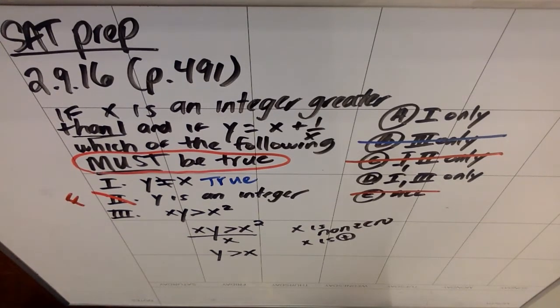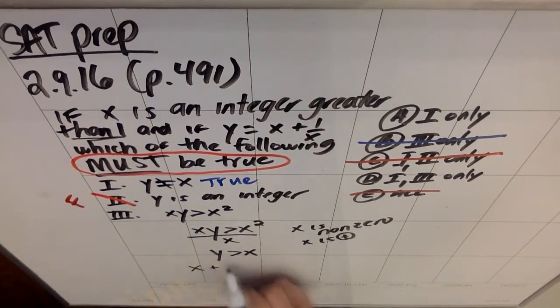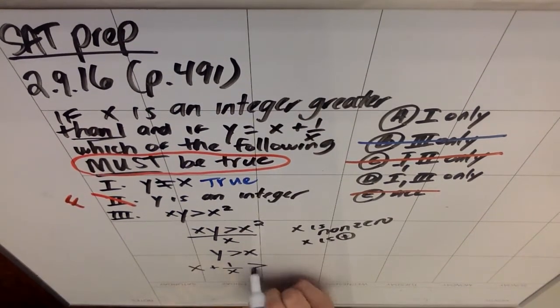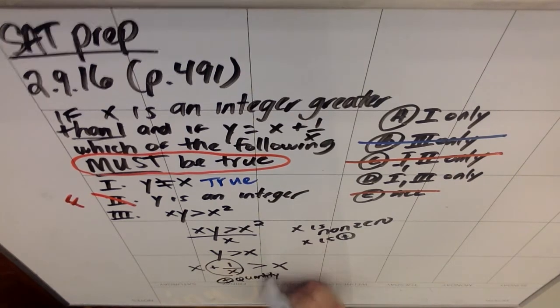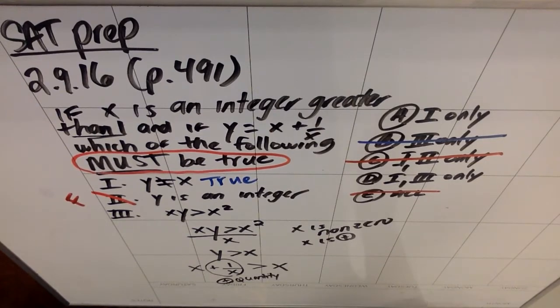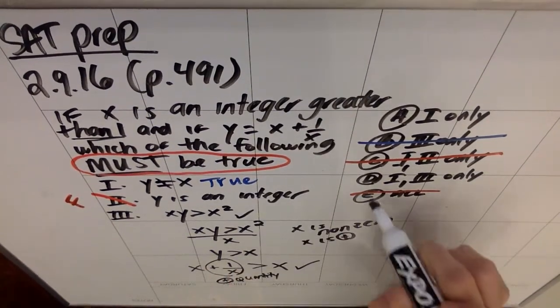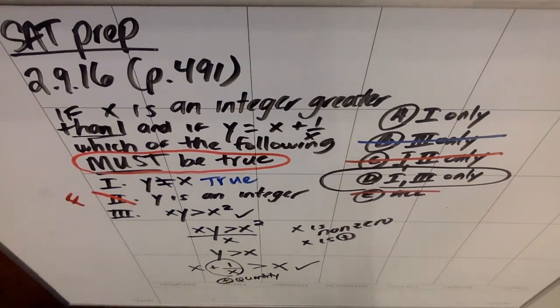And you might say, okay, that's cool. But how do I know if that's true? Well, the other statement that we know is that y is the same as x plus one over x, which is bigger than x. Well, since x is a positive number, this is some sort of positive quantity. If you take x and add a positive quantity to it, you get a number that is bigger than the original x. So sure enough, three is also true. And my answer is D, one and three only.